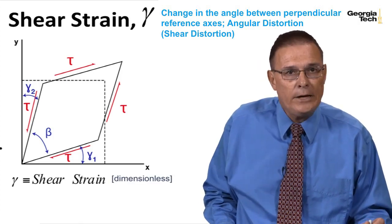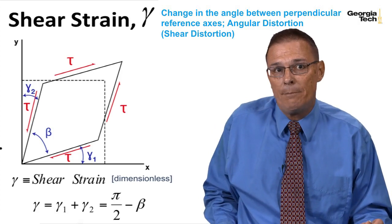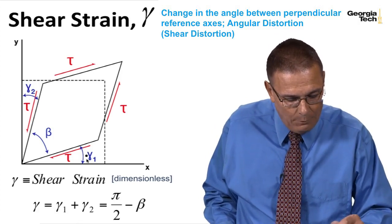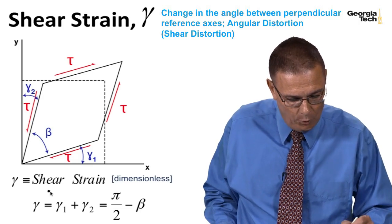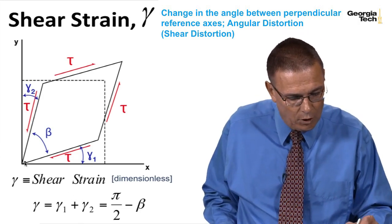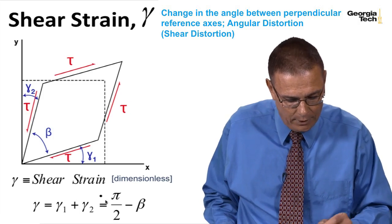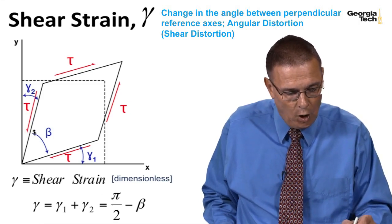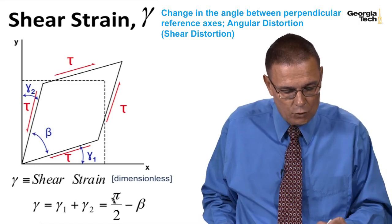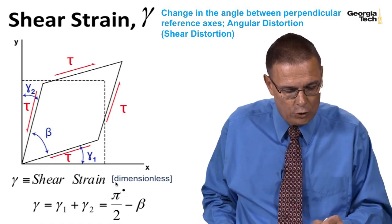And we defined shear strain, which is again dimensionless, as this angle gamma 1 plus gamma 2. And so that's the definition of shear strain. We know that we start off with our stress block with a right angle here. So if we call this angle beta, then the shear strain is equal to 90 degrees or pi over 2 minus beta.